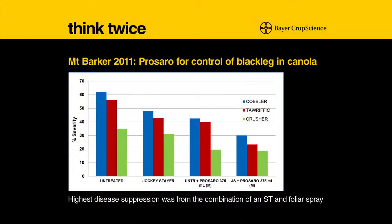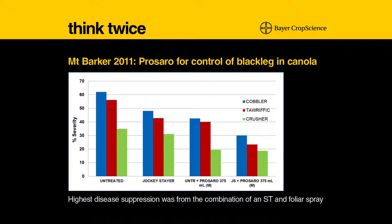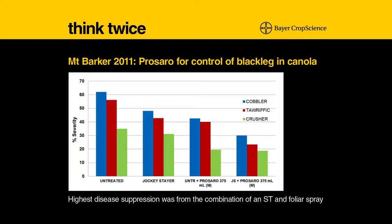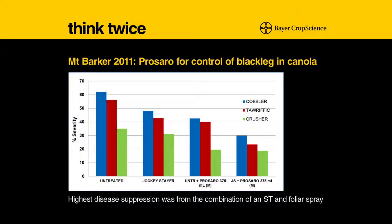It's not just one option — it's about thinking twice. Jockey on its own is better than untreated in reducing the severity of stem canker across Cobbler, Terrific, and Crusher varieties. We could put Prosaro on its own at the four to six leaf stage and it does a good job, but when you work out the economics, you're probably better off with just the seed treatment. Where it really pays off is with jockey stayer plus Prosaro in terms of reducing the disease.